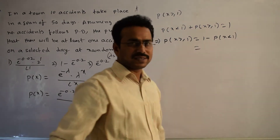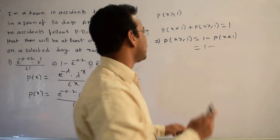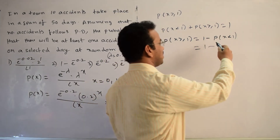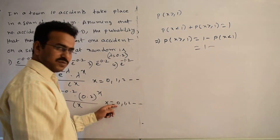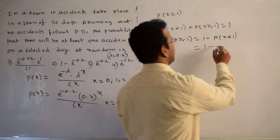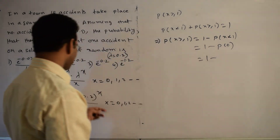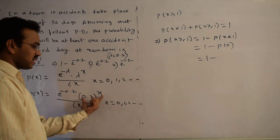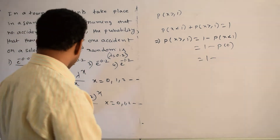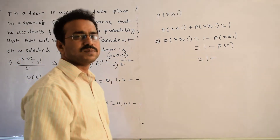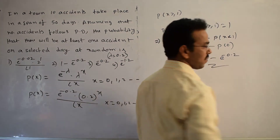P(X < 1) means only x = 0 is possible, so it equals P(0). Substituting x = 0 into the formula, the numerator becomes (0.2)^0 = 1, and the denominator 0! = 1, so P(0) = e^(−0.2). Therefore, P(X ≥ 1) = 1 − e^(−0.2), and this is the required result.